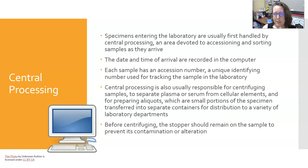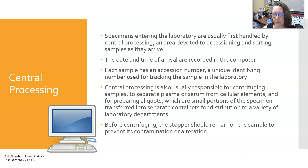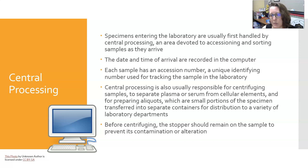Using the accession number, if everything is entered correctly, you should be able to track when the order was put in, when the sample was collected, when it was accessioned in, when it was loaded on the analyzer, when results were ready, when results were finalized, and when they crossed over. It's a very important number to help track specimens and identify where problems may have occurred.